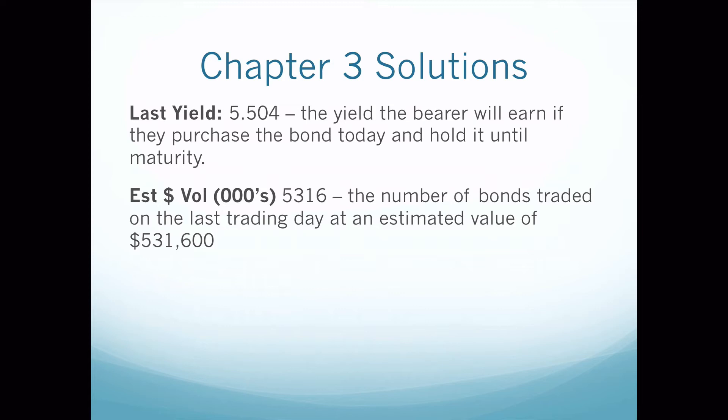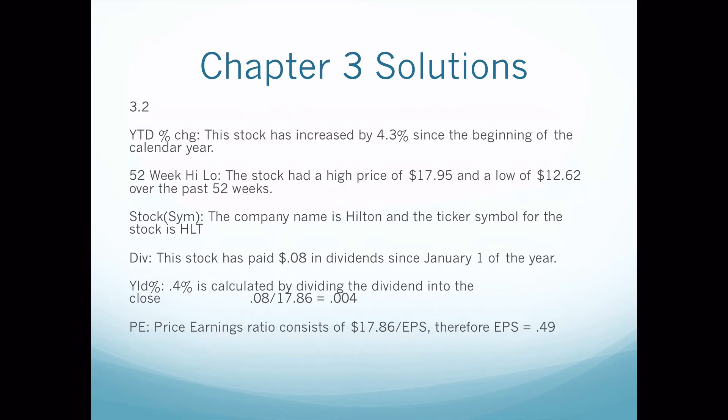The reason the yield is less than the coupon is because you're paying a premium. I actually took an entire course as an undergraduate student on calculating that number, so just know what it is — we don't need to worry about calculating it. Then we have the estimated dollar volume in thousands. The unit volume is 5,316, so five thousand three hundred sixteen bonds were bought and sold on the last trading day.